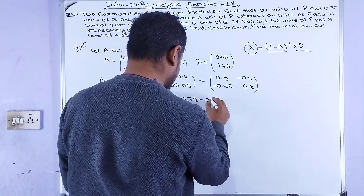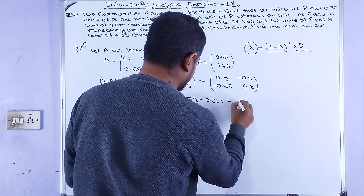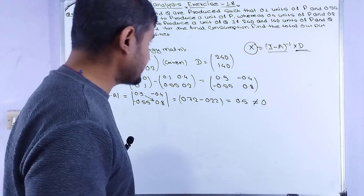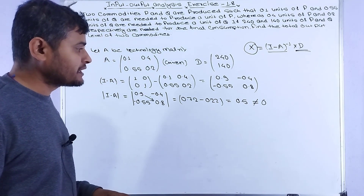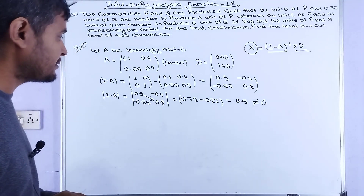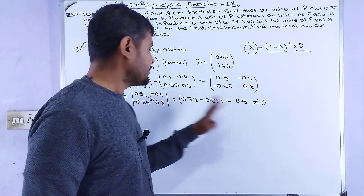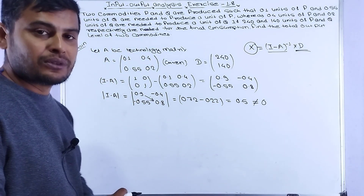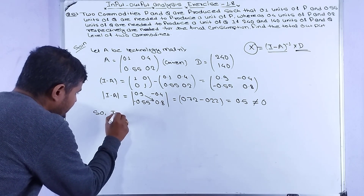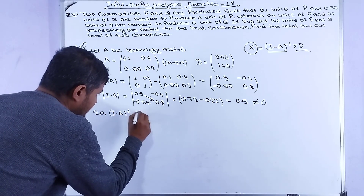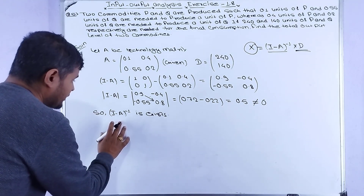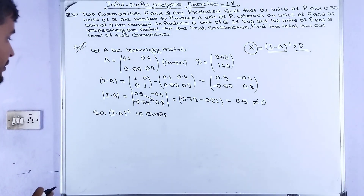Since the determinant equals 0.5, which is not equal to zero, the matrix (I - A) is non-singular. Therefore the inverse of (I - A) exists.